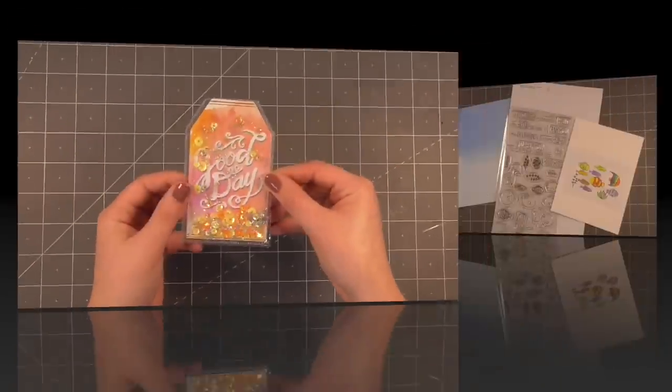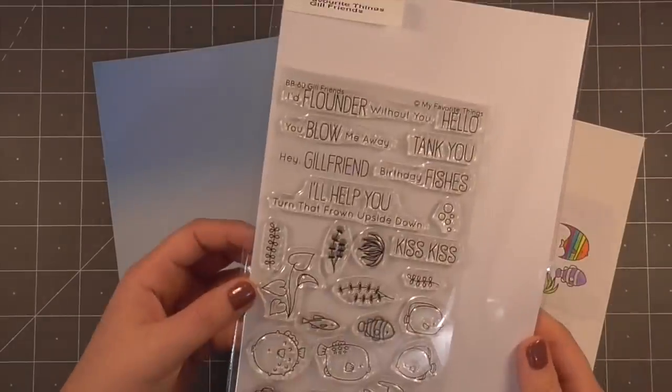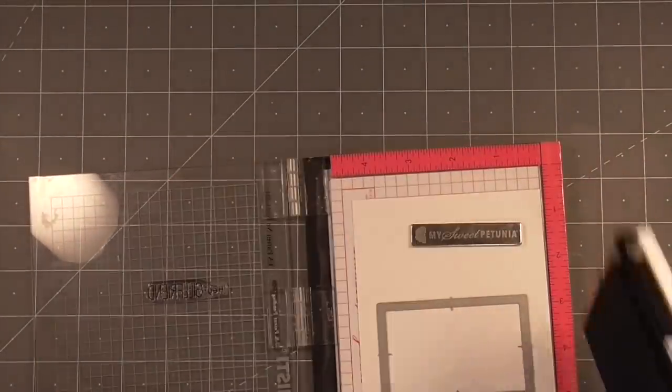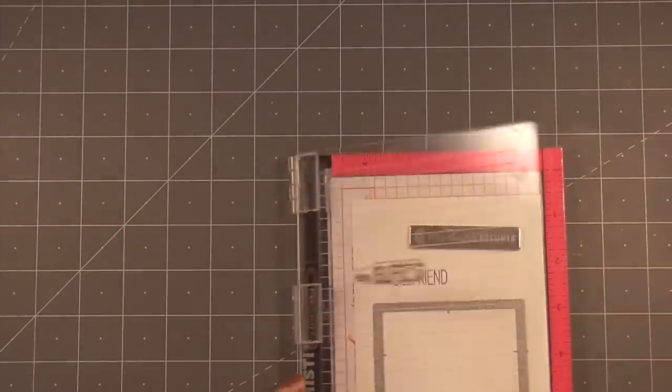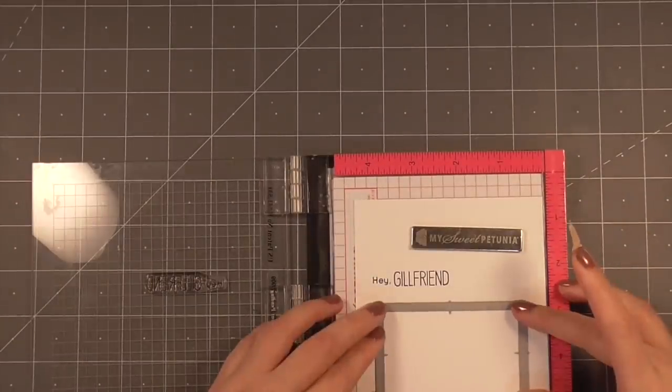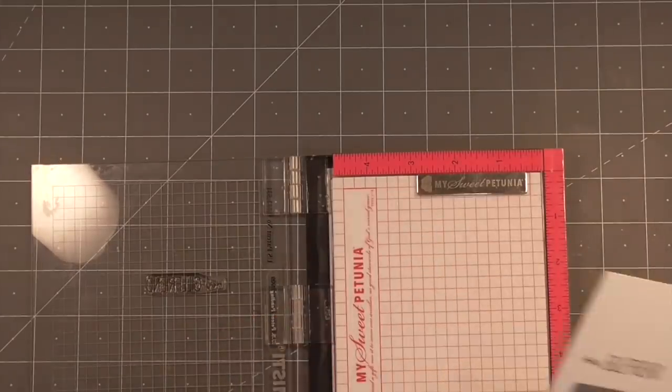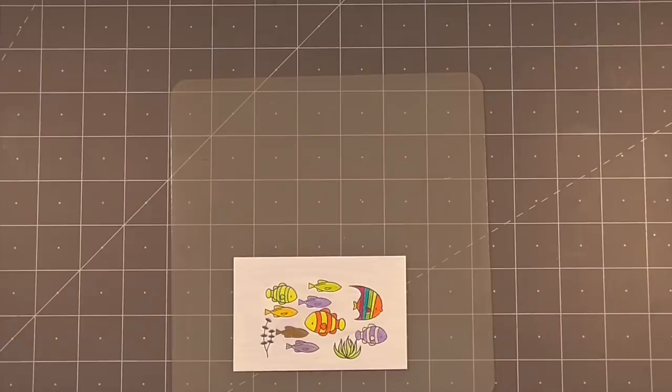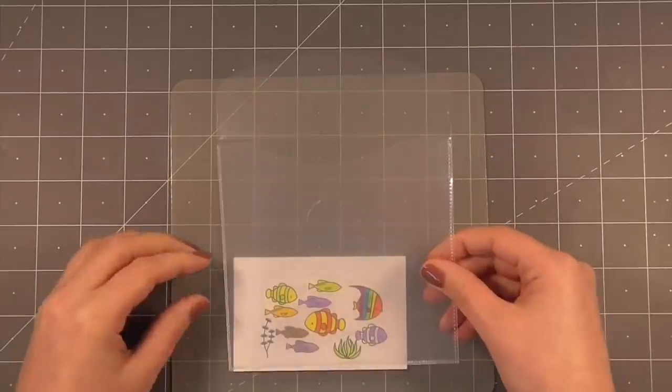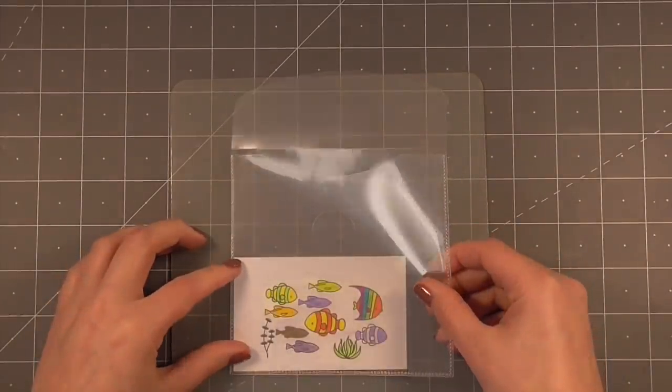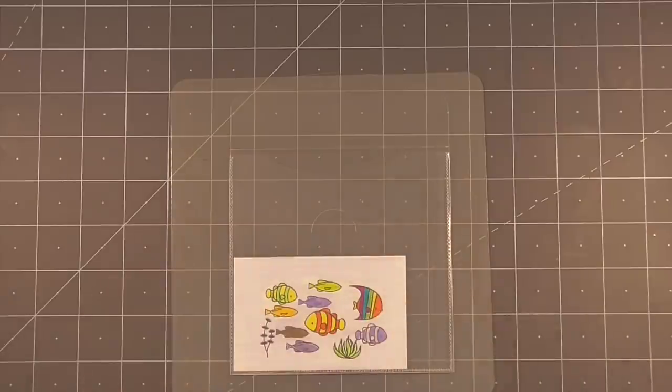For the final hack in my video I'm going to show how you can create a water shaker card. First up I'm going to stamp my sentiment on my front panel and then I will die cut this rectangle that will act as my fish tank. I went ahead and stamped and colored some beautiful little fish, these are so cute and they will be the decoration within the fish tank.